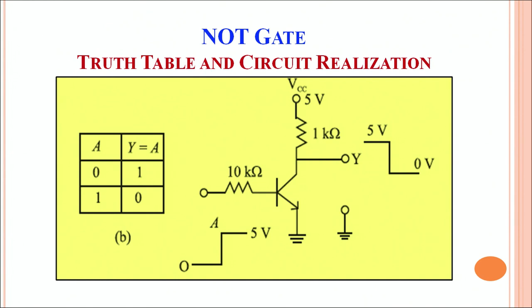In figure B, the truth table indicates whenever your input is 0, the output is complement of the input, that means it is 1. When the input is 1, the output becomes 0.